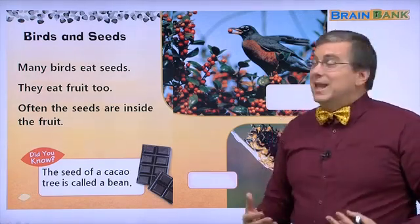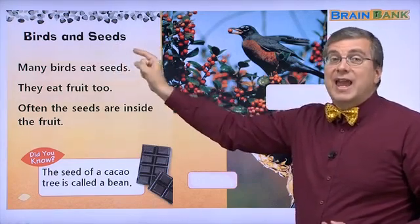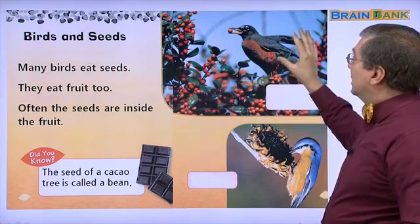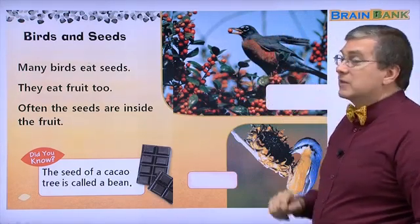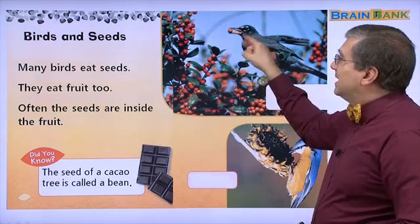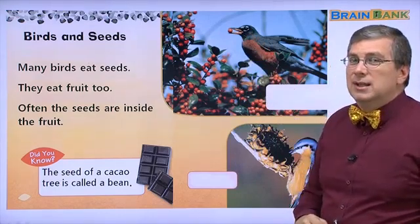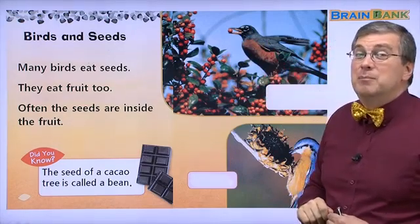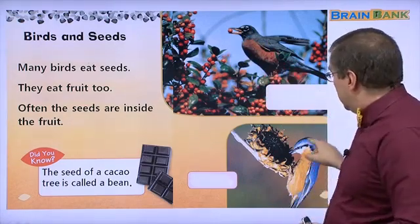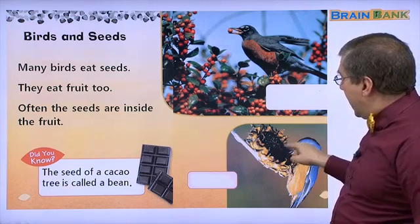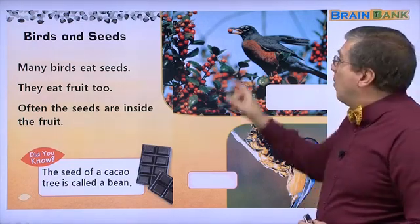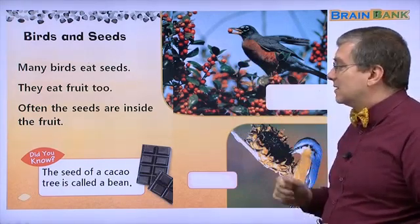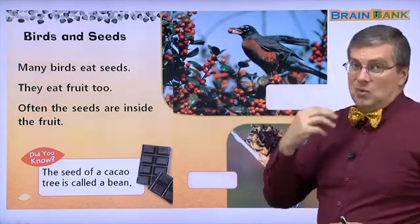Another way is by birds. Birds and seeds. What do we see here? We see a bird eating some fruit. What's inside the fruit? There are seeds inside the fruit, the berry. Here is another bird and it's eating the seeds. What will happen to the fruit and the seeds?